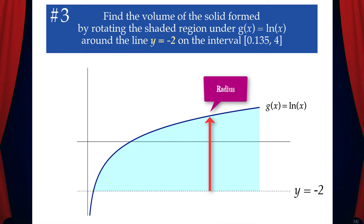The distance between y equals negative 2 and the x-axis is 2, and the distance between the x-axis and the function is g of x. So the radius is 2 plus g of x.